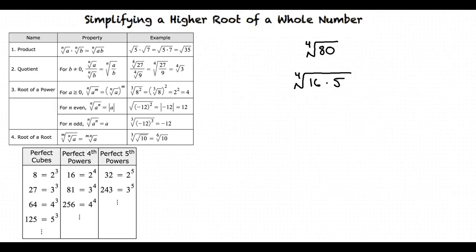16, which is a perfect fourth power, multiplied by 5. Now we can rewrite 16 as 2 to the power of 4. Next, using the product property, we can rewrite the fourth root of 2 to the power of 4 times 5 as the fourth root of 2 to the power of 4 multiplied by the fourth root of 5.